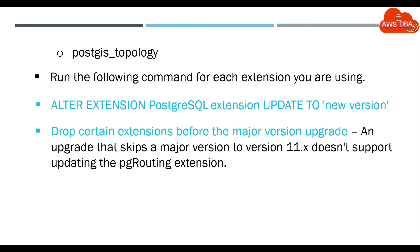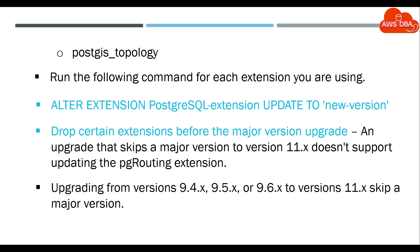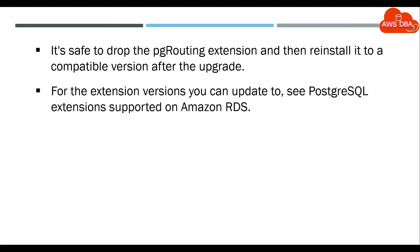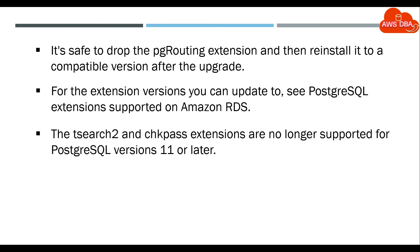Drop certain extensions before the major version upgrade — an upgrade that skips a major version to version 11.x doesn't support updating the pg_routing extension. Upgrading from versions 9.4.x, 9.5.x, or 9.6.x to versions 11.x skips a major version. It's safe to drop the pg_routing extension and then reinstall it to a compatible version after the upgrade. For the extension versions you can update to, see 'PostgreSQL extensions supported on Amazon RDS'. If you are upgrading to version 11.x, drop the tsearch2 and should_pass extensions before the upgrade.